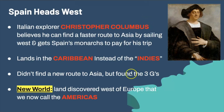He finds two massive continents, and those do provide Spain and later other European countries with the three Gs — they're able to spread God, gain the glory of setting up new colonies, as well as the gold from resources and physical gold. This land from this point forward is going to be known as the New World, which we now call the Americas.